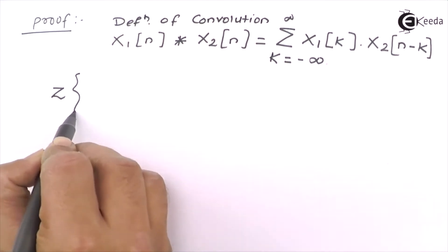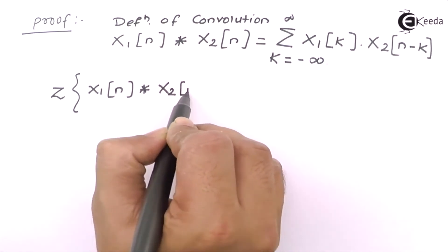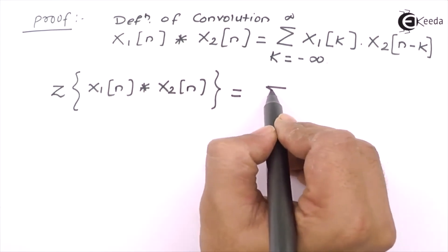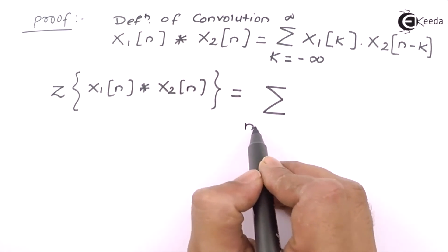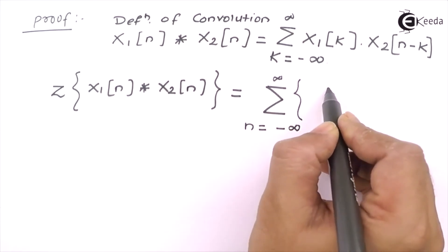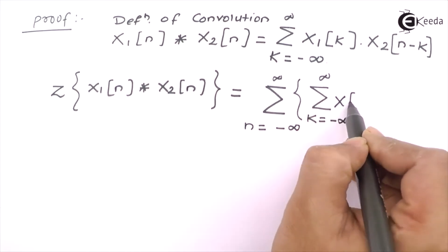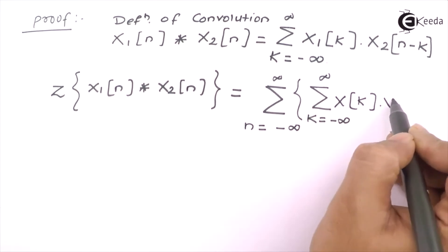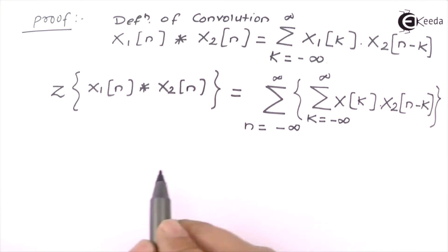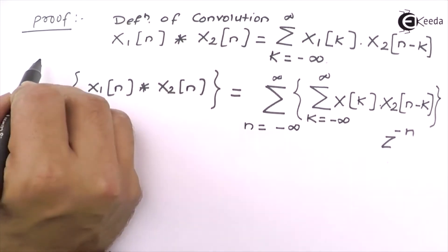The Z transform of X1[N] convolved with X2[N] is the summation where n varies from minus infinity to infinity of the whole signal, which is the summation of k from minus infinity to infinity of X1[k] times X2[N-k], multiplied by Z raised to minus N. This is the definition of Z transform.